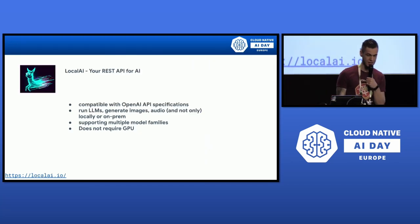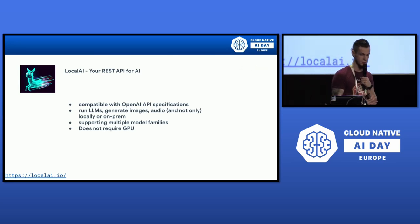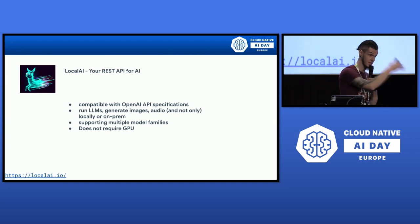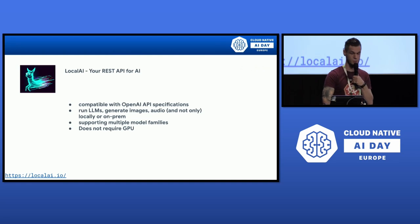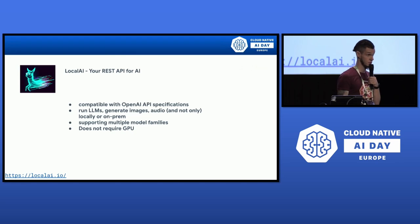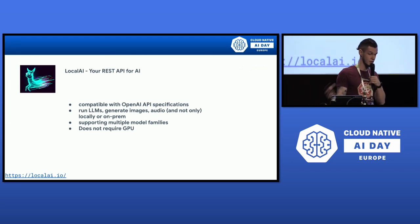What is LocalAI? LocalAI is an open source project that provides a REST API compatible with OpenAI API specifications. We can use LocalAI to run our LLM models inside our clusters — it has a Helm chart so we can deploy it in Kubernetes. Benefits include load distribution, running multiple models at once, generating images, generating audio, and best of all: it does not require a GPU.